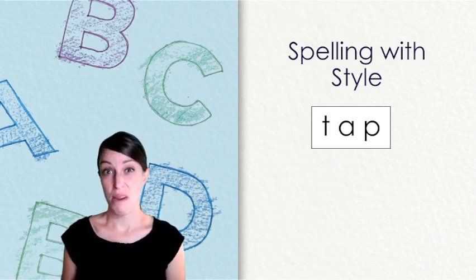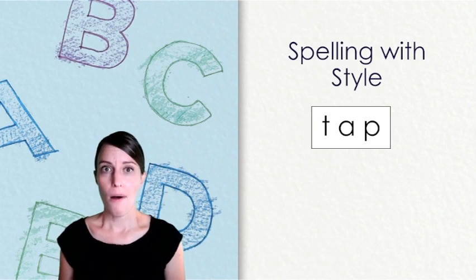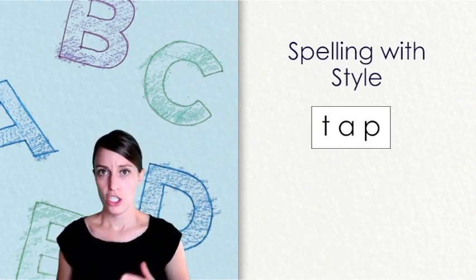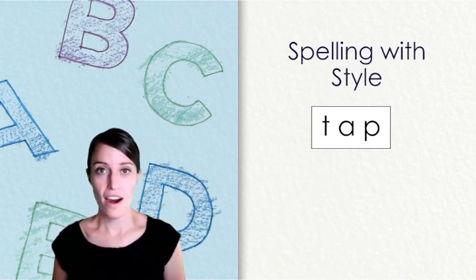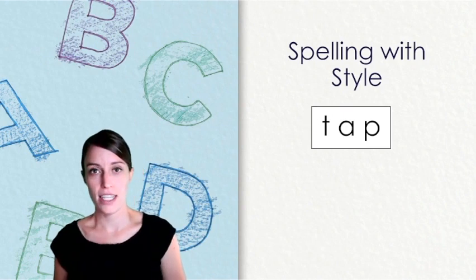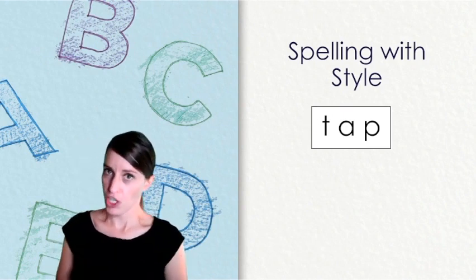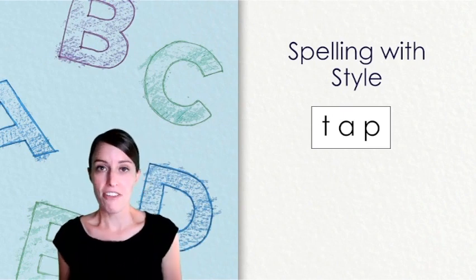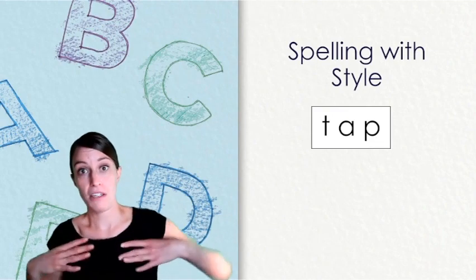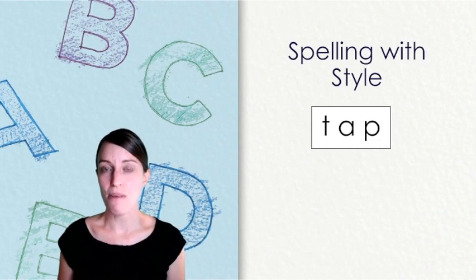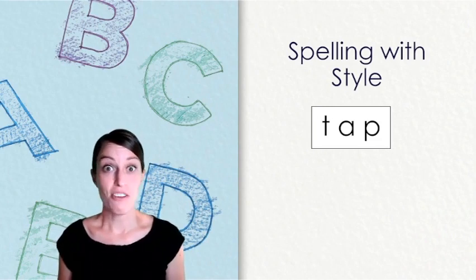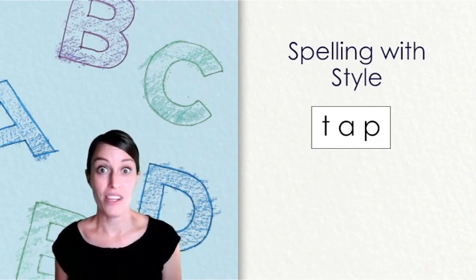That's kind of my boring normal voice. But what if I try to spell it in my robot voice? T-A-P. Or I can spell this word with my opera voice. T-A-P. Or even like a chicken. T-A-P. Let's go ahead and spell this word together and you can use any voice you like.